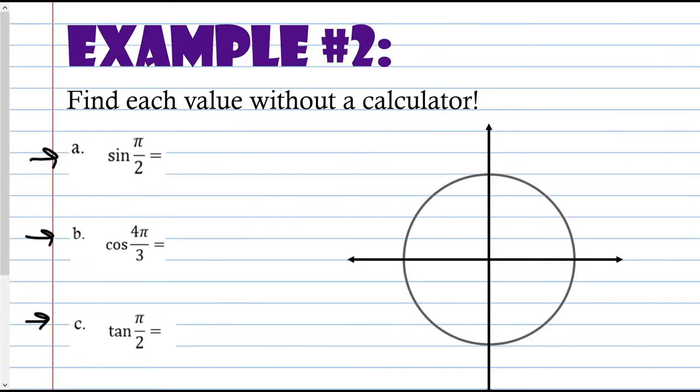For example two, find each value without a calculator. You need to be able to find values of angles using sine, cosine, and tangent without a calculator, so you do need the unit circle memorized to a certain degree. The important reference angles are 30 degrees, 45 degrees, and 60 degrees. You should also know every 90-degree angle: 0, 90, 180, 270, and 360 (which is the same as 0).